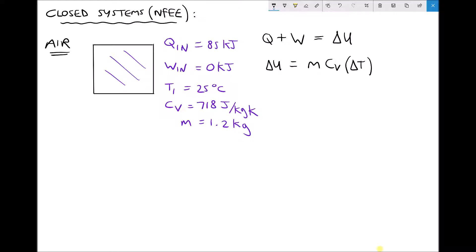In this instance we have Q in of 85 kilojoules therefore Q is positive. We have 85 kilojoules plus the work done. In this case we're not doing any work on the system so there's no work energy to add. That equals our change in internal energy, therefore the change in internal energy is just 85 kilojoules.